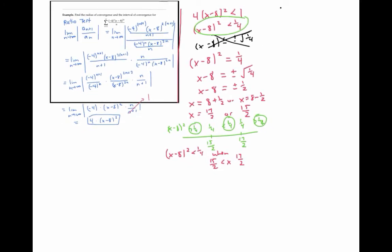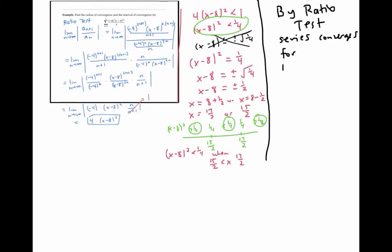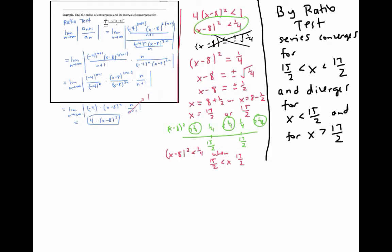By the ratio test, our series converges for x between 15 halves and 17 halves. The ratio test also tells us the series diverges when this expression is greater than one — in other words, when x minus eight squared is greater than one fourth, which means x less than 15 halves or greater than 17 halves. The only thing left to figure out is what happens at the endpoints 15 halves and 17 halves.